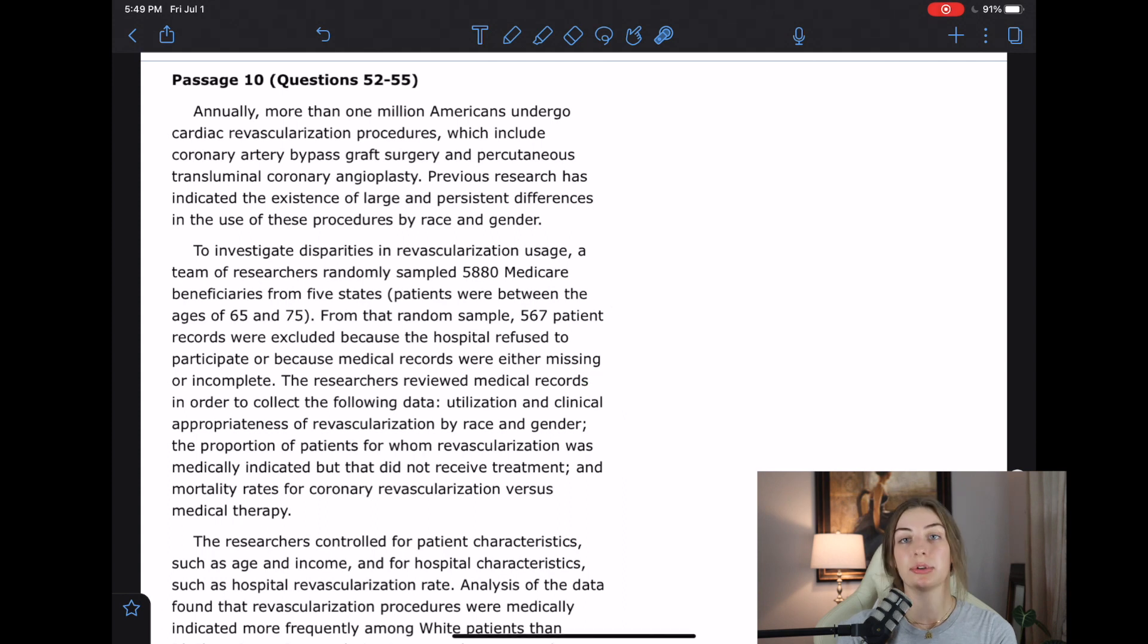That says, I wonder if they will ask us about some research methods question based on that. The researchers reviewed medical records in order to collect the following data: utilization and clinical appropriateness of revascularization by race and gender. The proportion of patients for whom revascularization was medically indicated but that did not receive treatment. That's a frowny face. And mortality rates for coronary revascularization versus medical therapy.